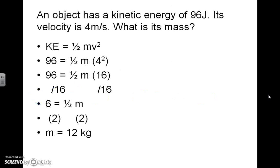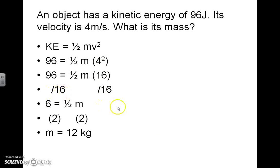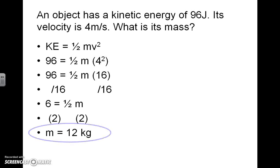Here's the next question: An object has a kinetic energy of 96 joules. Its velocity is 4 meters per second. What is its mass? We have the kinetic energy equation and these substitutions. Simplifying the exponent and dividing both sides of the equation by 8 leaves us with one half the mass — in other words, one half of the answer equal to 6. To undo the one half, you multiply both sides by 2, giving a final answer of 12 kilograms.